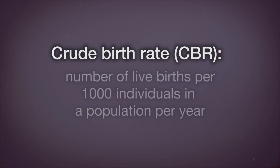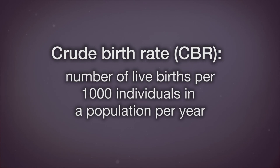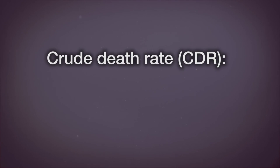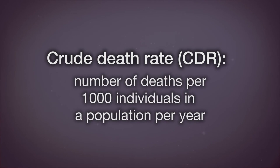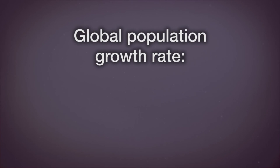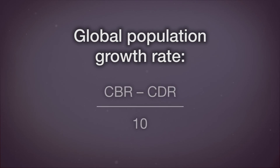There are population parameters that describe the inputs and outputs of the population system. Crude birth rate, CBR, is the crudest measure of the number of live births per 1,000 individuals in the population per year. Crude death rate, CDR, is the number of deaths per 1,000 individuals in the population per year. The global population growth rate is CBR minus CDR divided by 10. CBR and CDR are expressed per 1,000, so by dividing by 10, we turn it into a percentage.